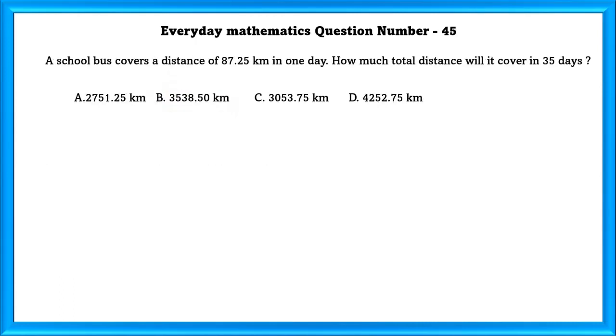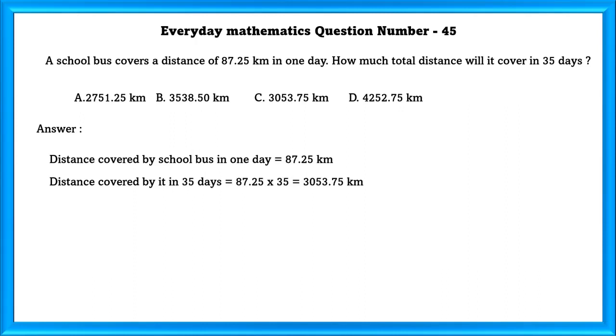Every day mathematics question number 45. A school bus covers a distance of 87.25 kilometer in a day. How much total distance will it cover in 35 days? Distance covered by school bus in 1 day is equal to 87.25 kilometer. Distance covered by it in 35 days is equal to 3053.75 kilometer.